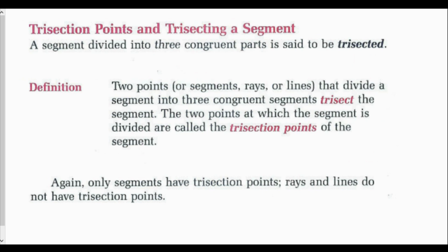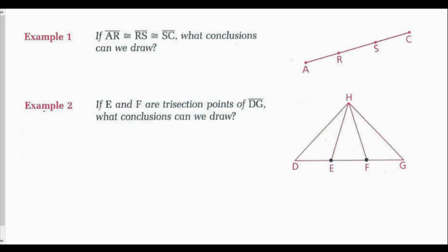Trisection points and trisecting a segment. A segment divided into three congruent parts is said to be trisected. Like bisection, we now have three congruent parts instead of two. Two points or segments, rays, or lines that divide a segment into three congruent segments trisect the segment. The two points at which the segment is divided are called the trisection points of the segment. Only segments have trisection points — rays and lines do not, because they extend infinitely. If line segment AR is congruent to line segment RS, which is congruent to line segment SC, then R and S are trisection points of line segment AC, and line segment AC is trisected by points R and S.